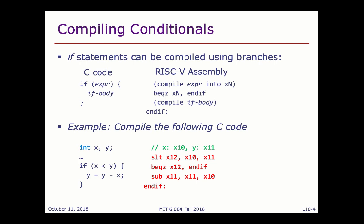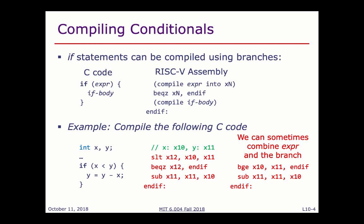We can optimize by combining the expression with the branch. RISC-V has different branch instructions, so here we can branch if x is not less than y — meaning x is greater than or equal to y — using a single BGE instruction instead of a separate SLT plus BEQ. Sometimes you can do this optimization if your branch condition is simple, but not always.